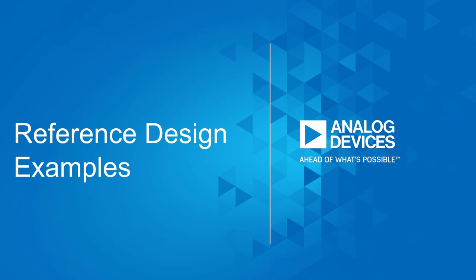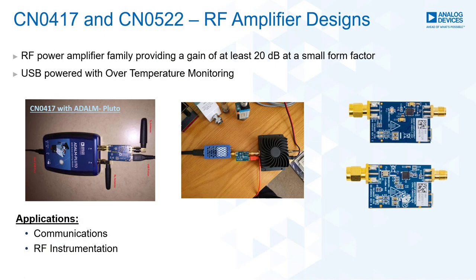In this section, I will showcase four different CFTL examples, but there are hundreds available. These are all released projects, so for more details, check analog.com. First up are CN0417 and CN0522, which are RF amplifier designs for 2.4GHz and 918MHz respectively. These provide a gain of at least 20 dB in a small form factor. It is a purely analog system — you just input your analog RF signal and get its amplified version on the output port. These can be used with ADALM-PLUTO, as shown on the image on the left, or to amplify your own radio transmit signal.